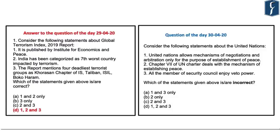The question of the day: Consider the following statements about the United Nations. Statement one: The UN allows mechanisms of negotiation and arbitration only for the purpose of establishment of peace. Statement two: Chapter 7 of the UN Charter deals with the mechanism of establishing peace. Statement three: All members of the Security Council enjoy veto power. Which of the statements given above is/are incorrect? Option A: One and three only. Option B: Two only. Option C: Two and three. Option D: One, two, and three.